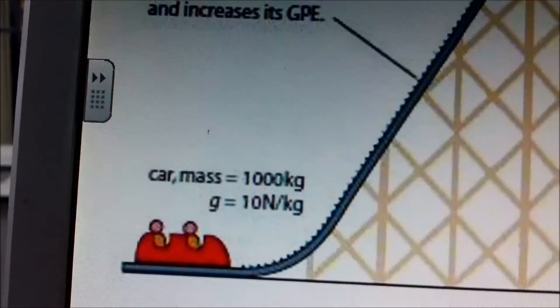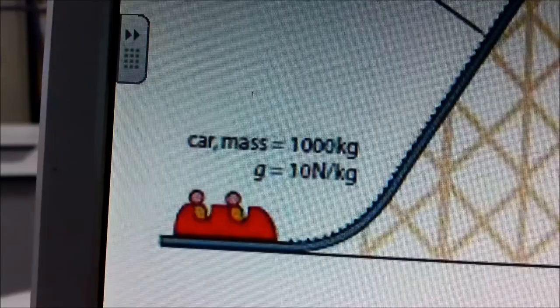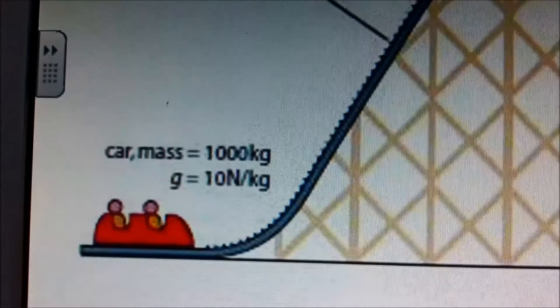At the start of the roller coaster, the roller coaster car is on the ground. It has no gravitational potential energy. It's not moving, therefore it has no kinetic energy.